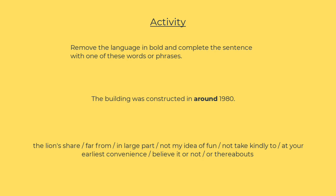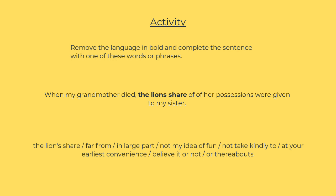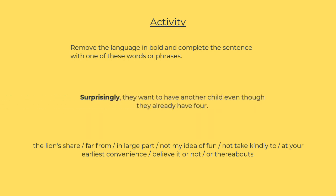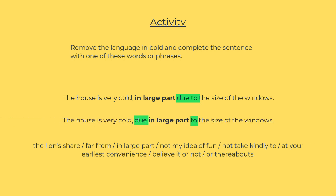Next we have: the building was constructed in around 1980. The answer is: the building was constructed in 1980 or thereabouts. For the next example, the house is very cold mainly due to the size of the windows. The answer uses in large part due to. Now, instead of in large part due to, you can also say due in large part to, which sounds even more sophisticated.